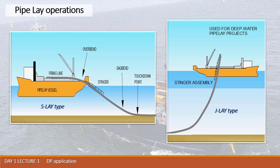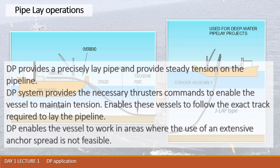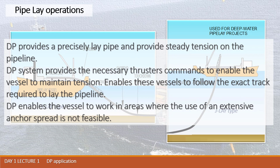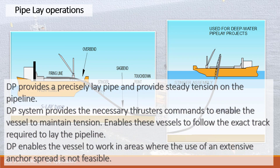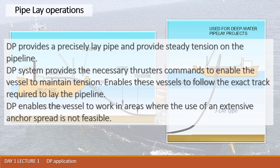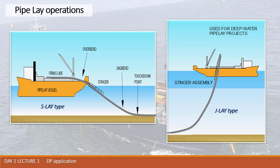The pipe laying industry uses a firing line on board of the pipe lay vessel, where the firing process may be performed in double joint. This means that a few pipes are connected to each other on board, and then the long piece of welded pipe is connected to the main line. DP is very often used to assist the station keeping of the vessel and movement of the vessel on track when a welded piece of pipe is done and needs to be discharged over the side of the vessel.